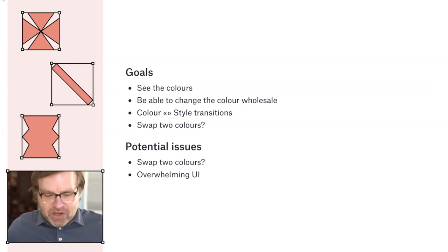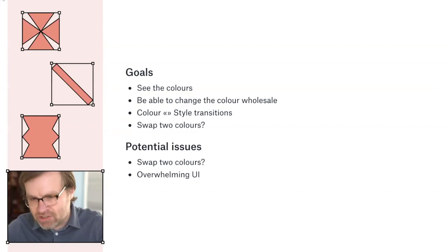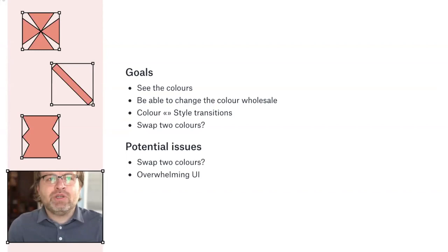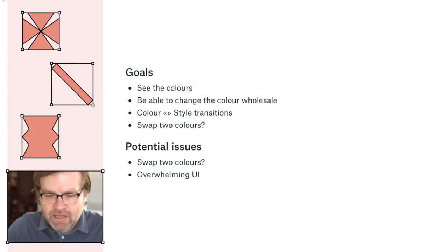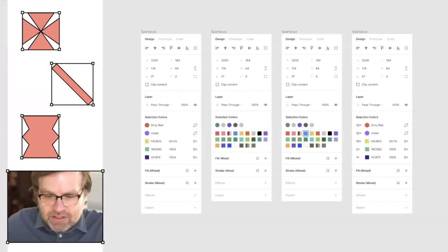We very quickly described a few basic goals and potential issues. See all the colors in your selection obviously; be able to switch between colors and styles, because it's really important to give people on-ramps to design systems — design systems can be intimidating, but allowing you to build one up as you go along can be interesting. The idea of swapping two colors was a goal, and potential issues: swapping might be tricky, and how do we not make an overwhelming UI if you make a big selection and have a million colors?